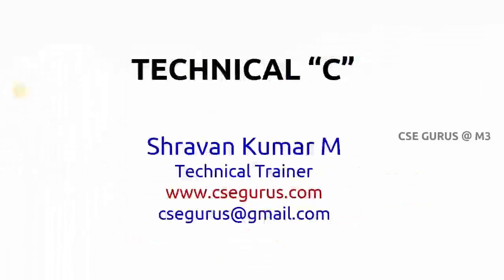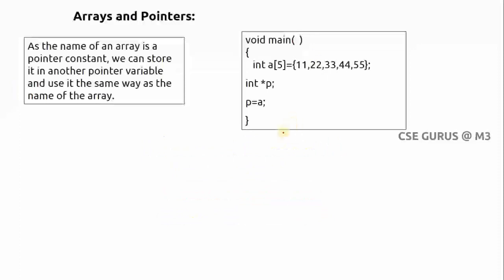Welcome to the video lectures on technical C by Shravan Kumar Mantri. In my previous video lecture we saw the concept of pointers with arrays where we did not take an extra pointer variable - we took an array a of 5, stored values, and printed elements using pointers without an extra pointer variable. Now I am going with an explicit pointer variable and how we can execute and get output differently.